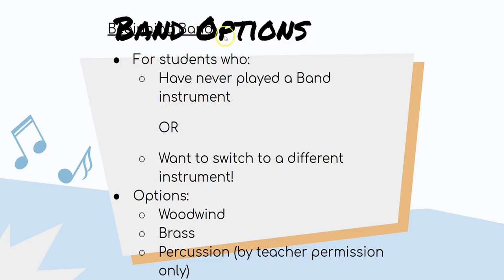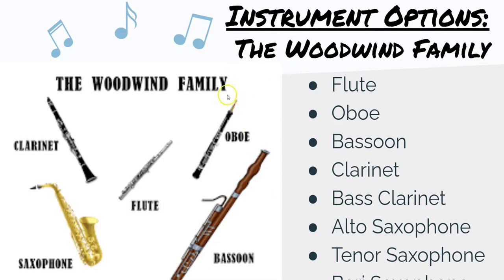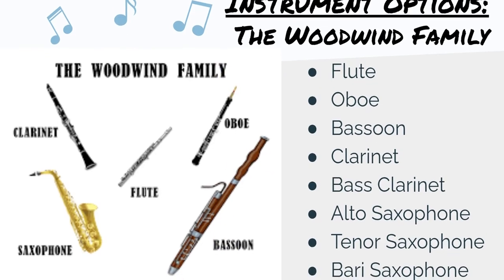Beginning band is for students who have never played a band instrument or want to switch to a new instrument. Options are woodwind, brass, or percussion — percussion is by teacher permission only from Mr. Miscot. For the woodwind family, instrument options include flute, oboe, bassoon, clarinet, bass clarinet, alto saxophone, and tenor saxophone.